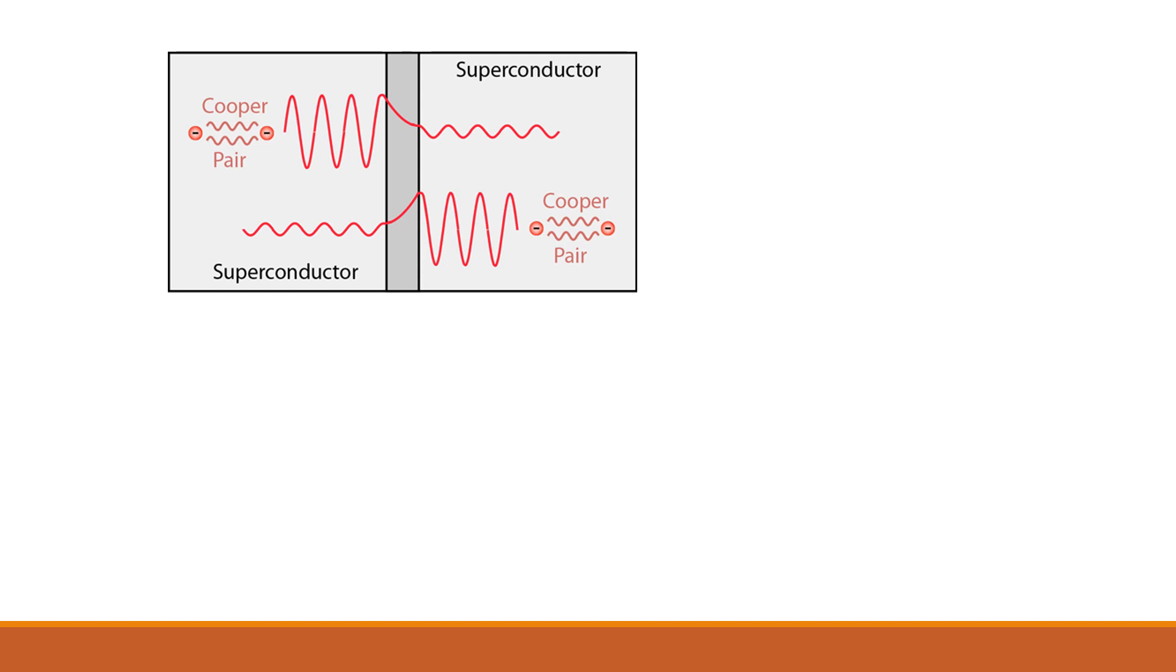This is a representation of a Josephson Junction, showing two superconductors separated by an insulating layer. This diagram demonstrates a Cooper pair tunneling through the insulating layer into the superconductor. Without any voltage running through the device, the current is proportional to the phase difference between the wave functions representing the Cooper pair.